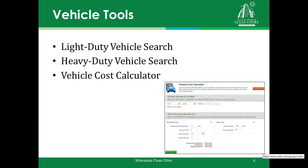Moving on to vehicle tools — there are light-duty and heavy-duty vehicle searches, available through the AFDC page. These allow you to find and compare alternative fuel vehicles, electric vehicles, and hybrids. You can search by fuel type, manufacturer, class, and model year. A sister site is fueleconomy.gov where you can get more details about individual vehicles by make and model. Finally, the Vehicle Cost Calculator shows the total cost of ownership and emissions for most vehicle models — you enter basic information about your driving habits and it displays a graph and chart of total cost, estimated fuel used, and emissions. You can compare as many vehicles as you like.